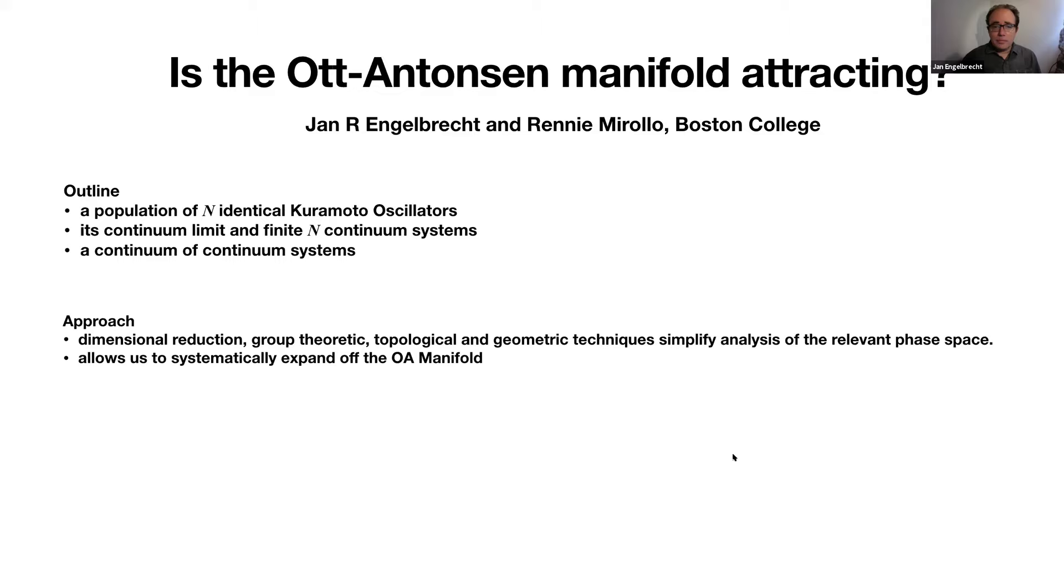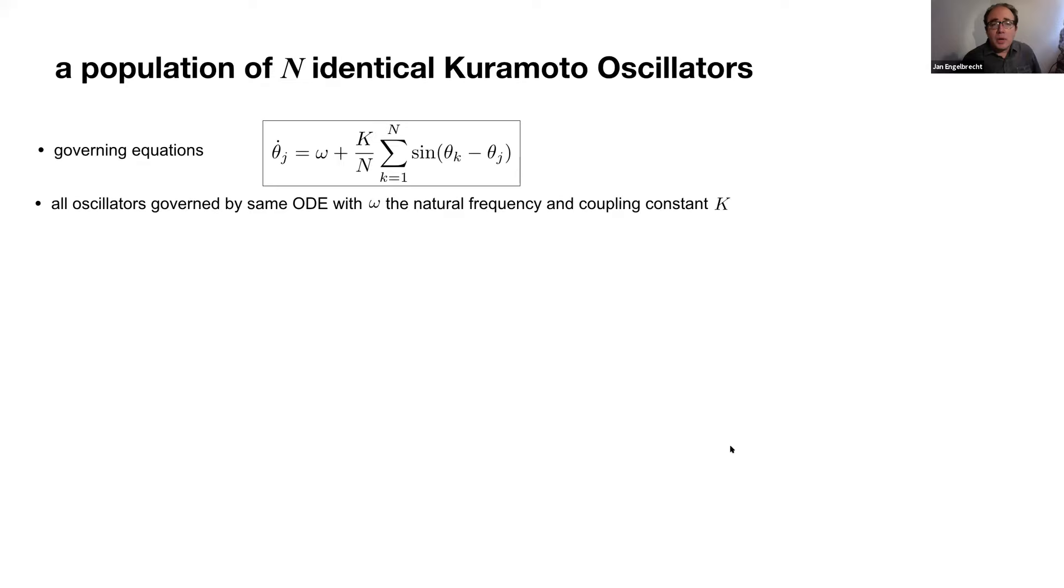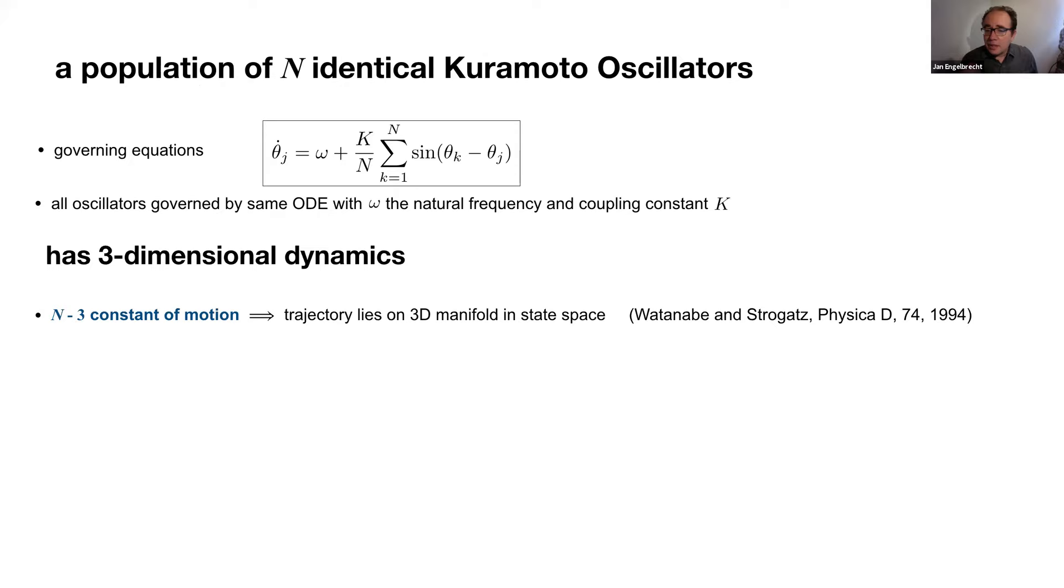So we've seen the Kuramoto model. I'm going to focus on a population of identical Kuramoto oscillators, which means they're described by the same ODE. For 26 years now, we've known from Watanabe and Strogatz that even though you would think the system has n-dimensional dynamics, there are n minus three constants of motion, which means that the dynamics is restricted to lie on a three-dimensional manifold.